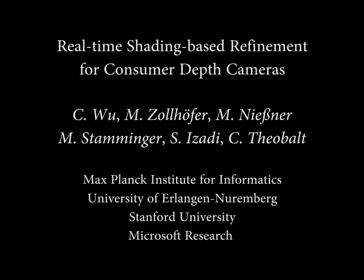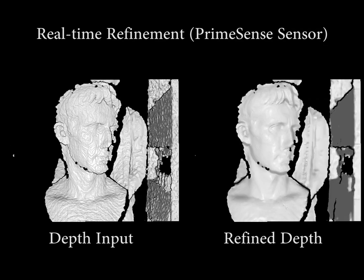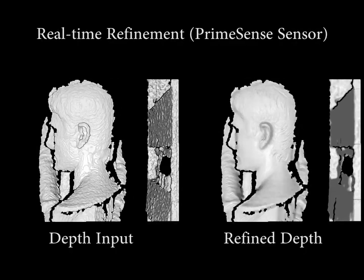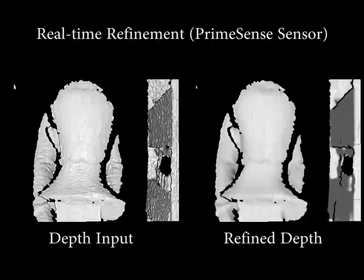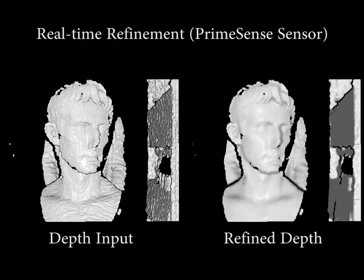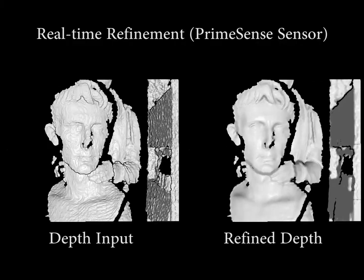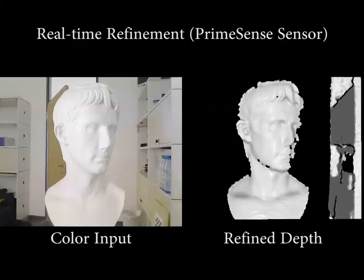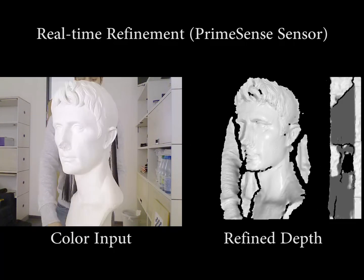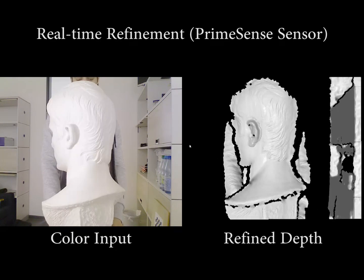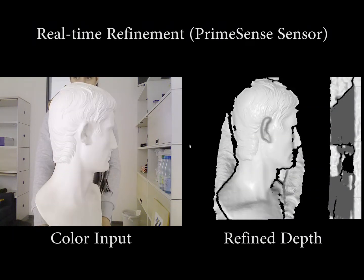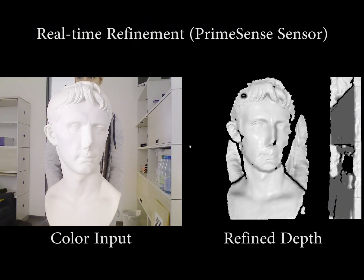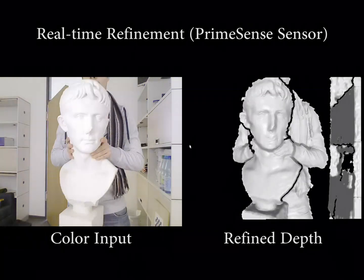We present the first real-time method for refinement of depth data using shape from shading in general uncontrolled scenes. Our real-time algorithm takes raw noisy depth data and an aligned RGB image as input, and outputs refined depth data according to shading cues in the RGB image. Our technique captures far more detail than the raw depth. The captured detail is not only plausible but also metrically faithful.